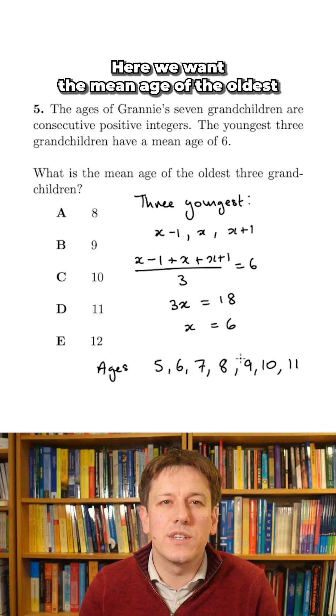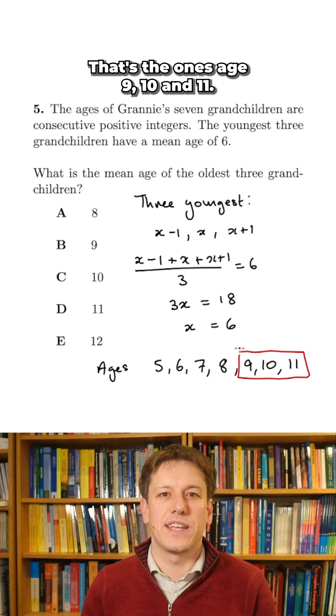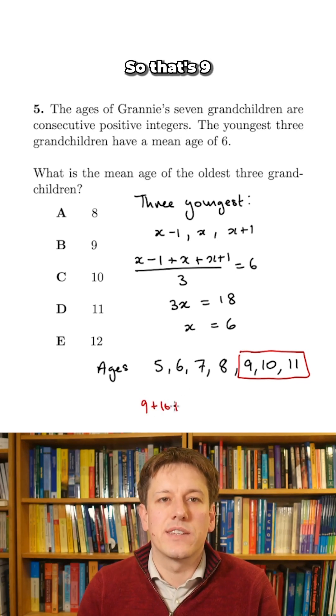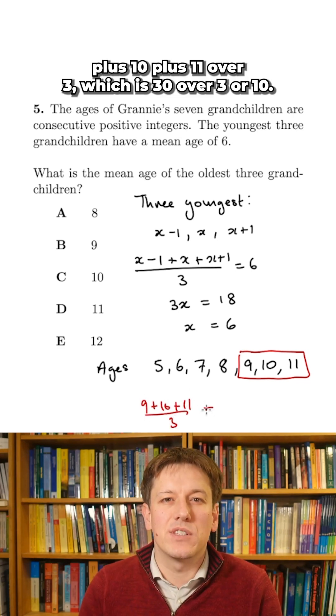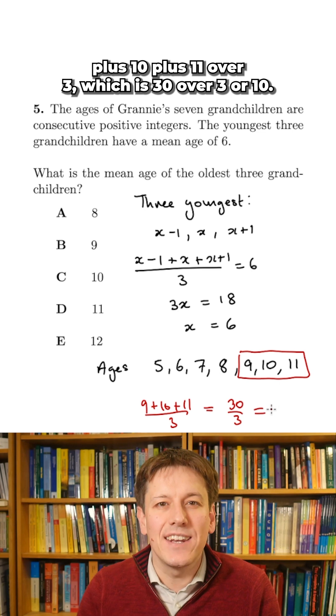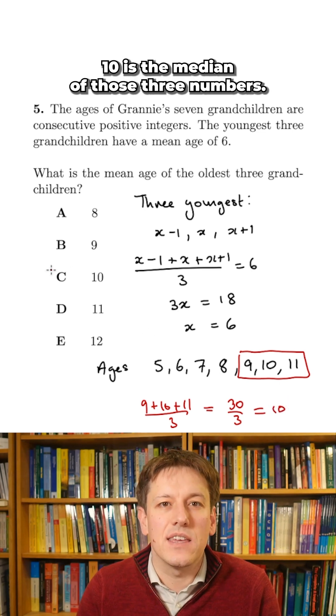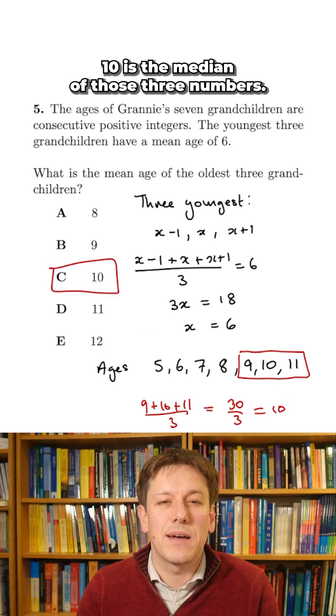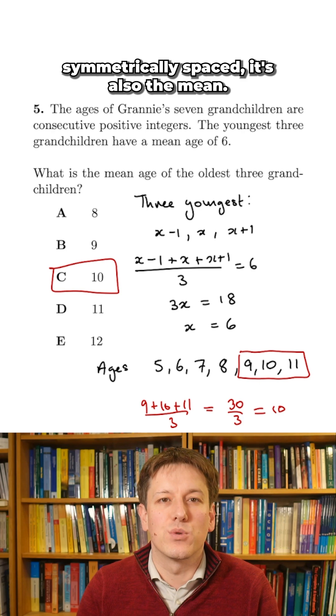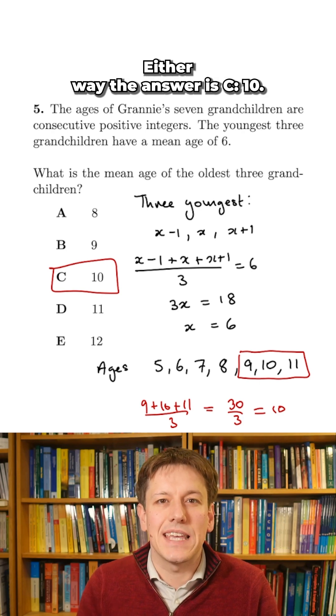Here we want the mean age of the oldest three grandchildren, that's the ones age nine, ten, and eleven, so that's nine plus ten plus eleven over three, which is thirty over three or ten, or you could just say that ten is the median of those three numbers, and because they are symmetrically spaced it's also the mean. Either way the answer is C, ten.